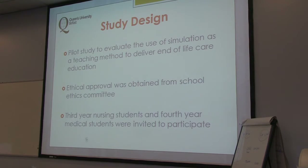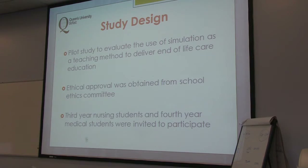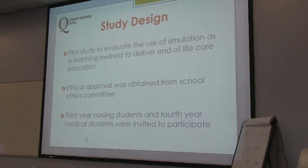We put in an application for ethical approval and received it at the start of this year in February. We initially looked to recruit third year nursing students and fourth year medical students as our target population. We went for third year nursing students because they would definitely have a theoretical background in end of life care and might have enough practical experience. Fourth year medical students were chosen, on the advice of our colleagues in medical education, because they would have completed their theoretical module and their oncology module, which would have introduced them to the concepts of how to care.